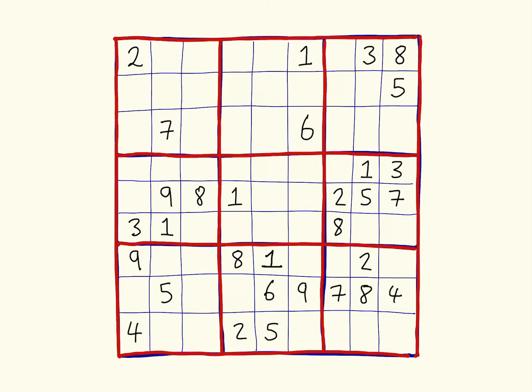Here is an example of a Sudoku puzzle — it's a nine by nine grid with some numbers and some blanks. The rules of the game are that you need to fill in all the missing squares to complete the grid. There are three simple rules: every row, every column, and every three by three box must have the numbers one to nine exactly once.